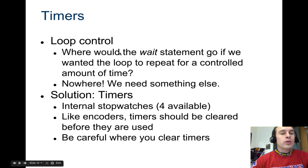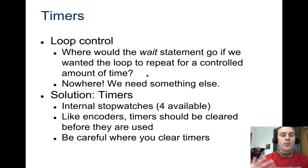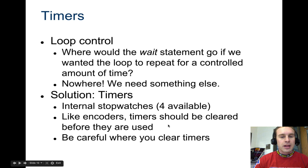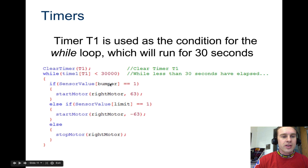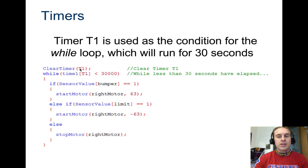Another way to control loops is with timers. Where would the wait statement go if we wanted the loop to repeat for a controlled amount of time? We need to use an internal stopwatch — a timer. Timers should always be cleared before they're used, and you need to be careful where you clear it — not in the middle of a timing statement. The first time you use it, clear the timer. The code for that is just clear timer, then the name of the timer. Timer names are preset: T1, T2, T3, and T4.